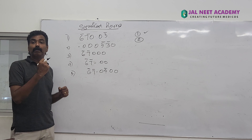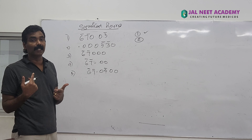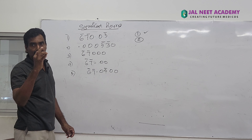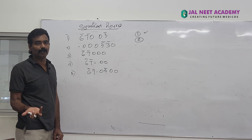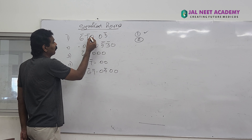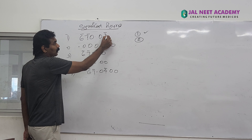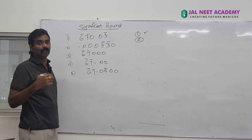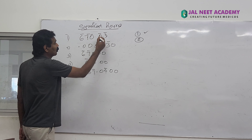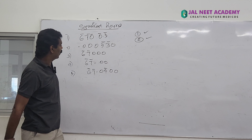Rule 2: all zeros between two non-zero digits are significant. In the first figure, there are two zeros between seven and three — seven and three are non-zero digits, and the zeros in between are significant by Rule 2.